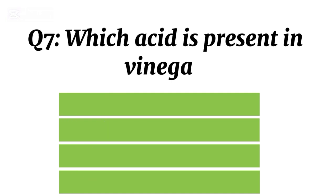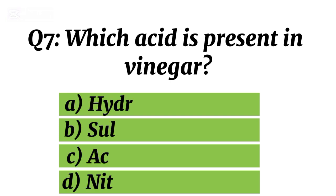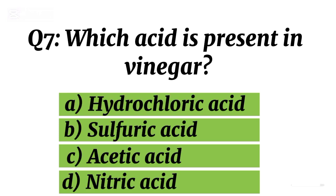Question 7. Which acid is present in vinegar? Correct option C. Acetic acid.